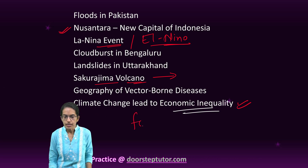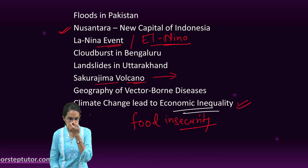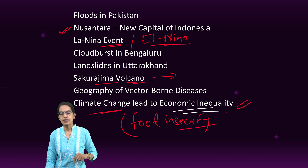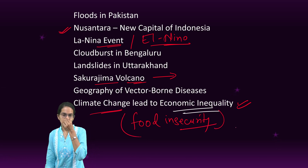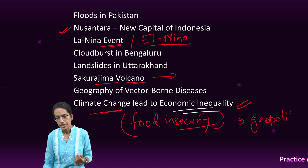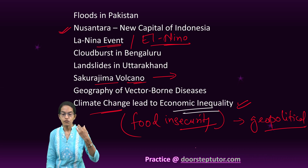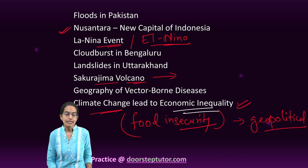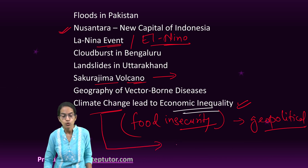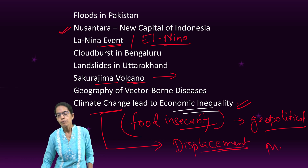Food insecurity is another important topic — food insecurity linked to climate change, and independently the issue of food insecurity due to increasing geopolitical tensions like the Ukraine-Russia conflict and the shortage of wheat due to heat waves in India. Climate change being linked to displacement is also key; an increase in climate-induced displacement or migration is an important topic.